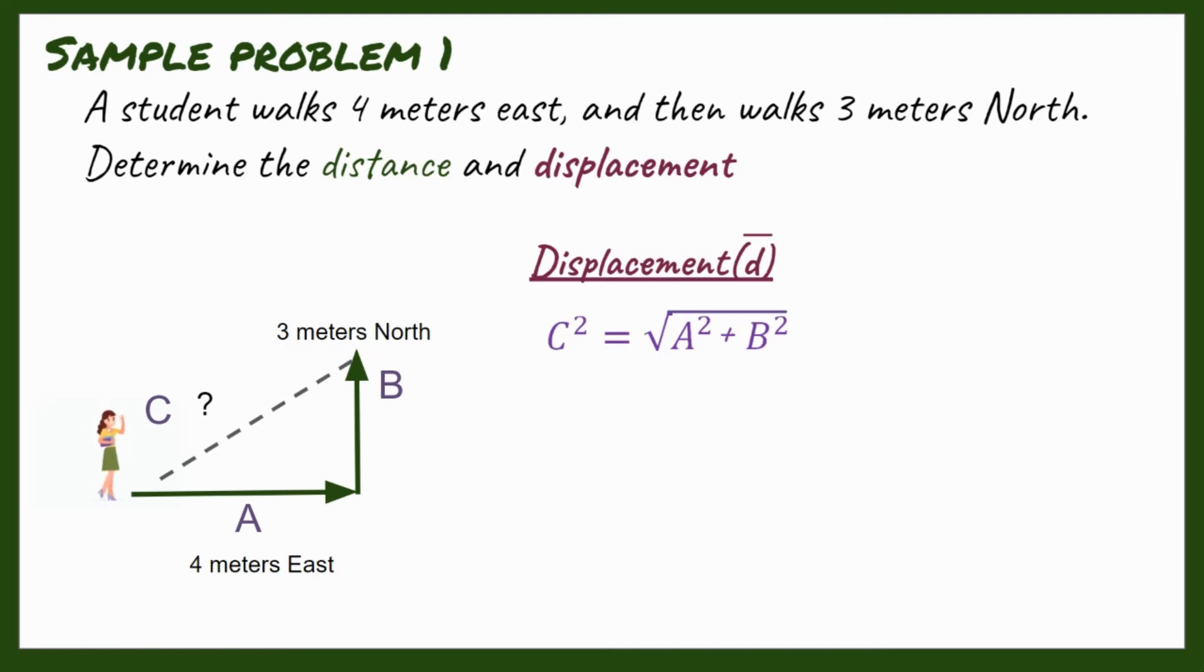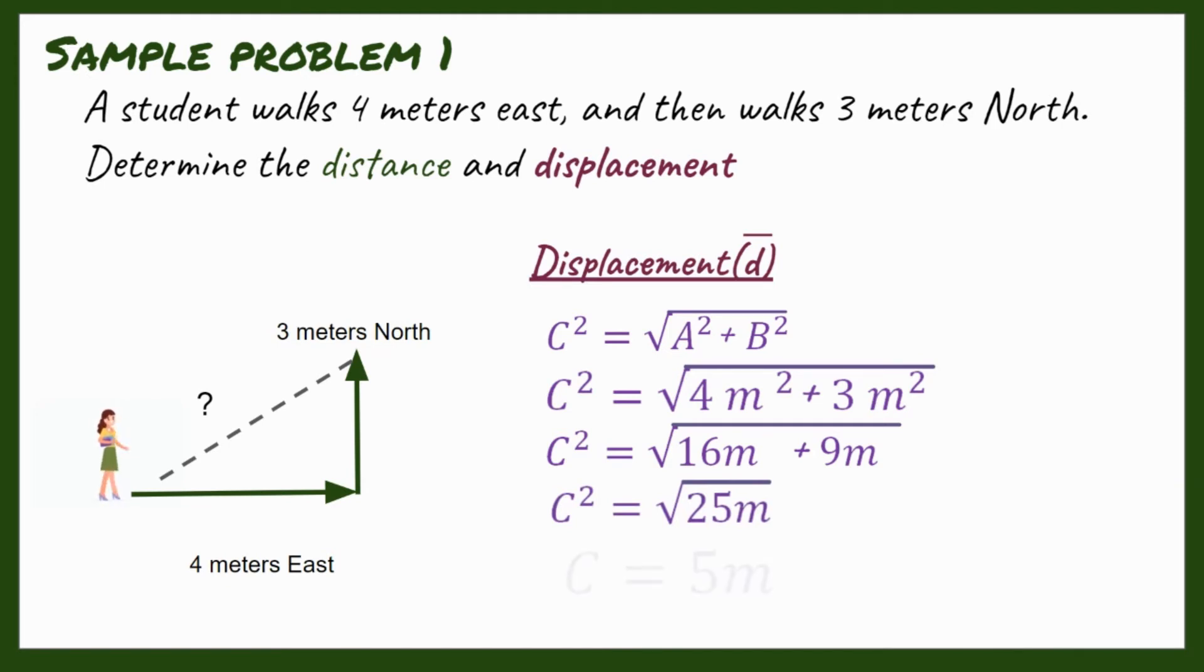Then, we substitute the value. a equals 4 squared, and b equals 3 squared. Now, 4 squared is equal to 16, and 3 squared is equal to 9. Then, we add them, and we find the square root of 25, which is 5 meters.